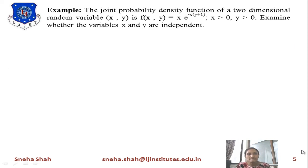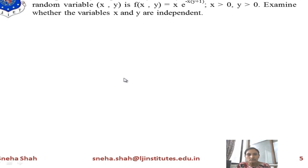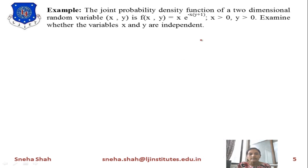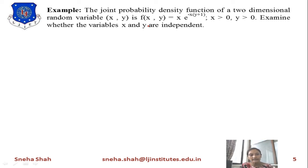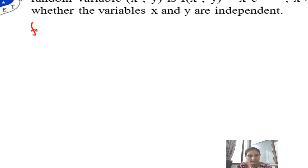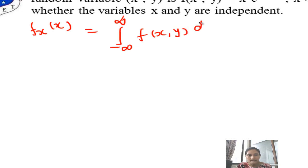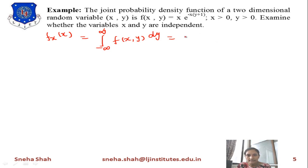The next example: the joint probability density function of a two-dimensional random variable is f(x, y) = x·e^(−x(y+1)), for x > 0 and y > 0. We need to examine whether variables x and y are independent. To check independence, we first find the marginal probability of x: f_X(x) = ∫₋∞^∞ f(x,y) dy. Since x > 0 and y > 0, the range becomes 0 to ∞.